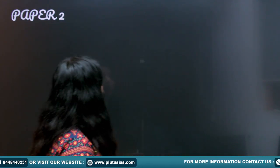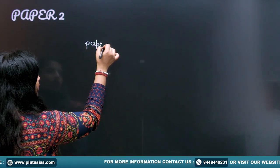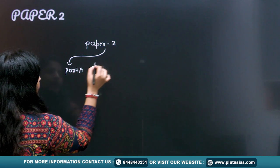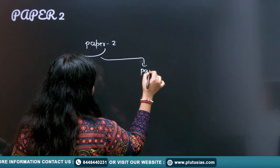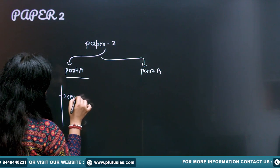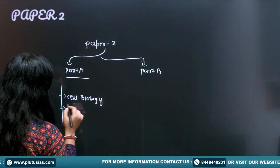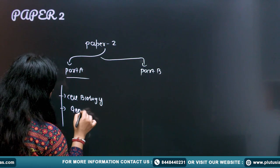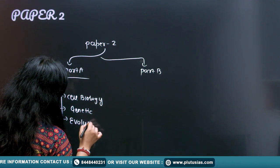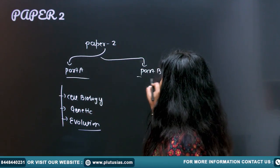Next, in your paper 2, you have also two parts. The one is your part A and the second is your part B. In part A, you have cell biology, next you have genetics, and next you have evolution and the systematic one.